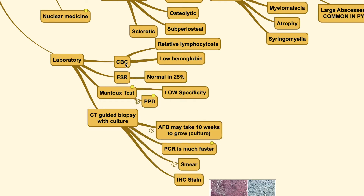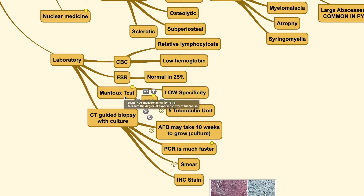Complete blood count and erythrocyte sedimentation rate may only reveal some changes such as relative lymphocytosis or low hemoglobin due to the chronic infection. The Mantoux test, which is now seldom done because of its low accuracy, does not measure immunity to tuberculosis; rather, it measures the degree of hypersensitivity to the tuberculin toxin.